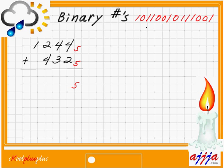Binary numbers — you can see the sample on the right-hand side: 1 0 1 1 0 0. That's right, only zero and one. On the left-hand side, base number 5. So: 1 2 4 4, okay, base number 5, plus base number 5: 4 3 2. That's it.